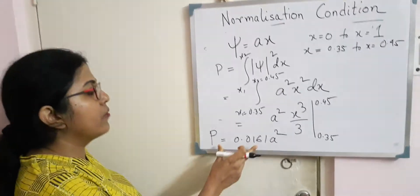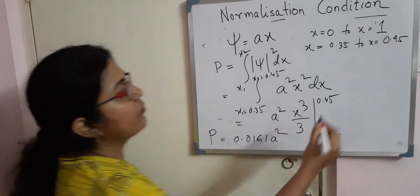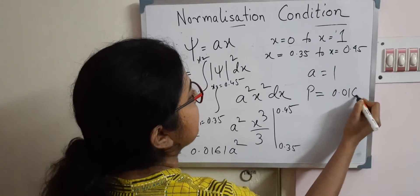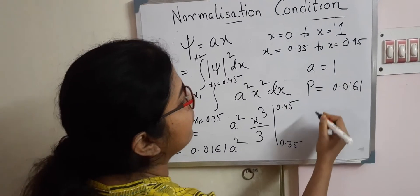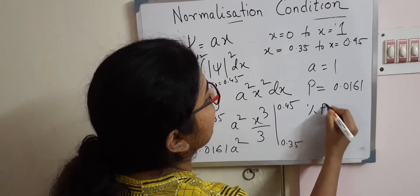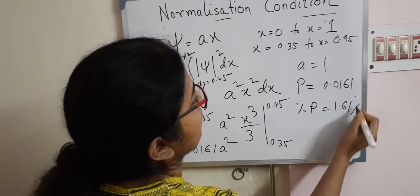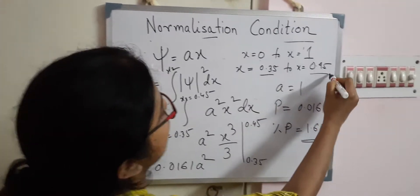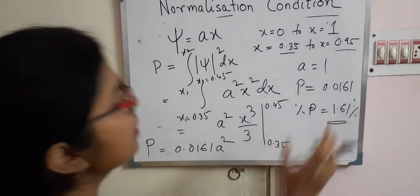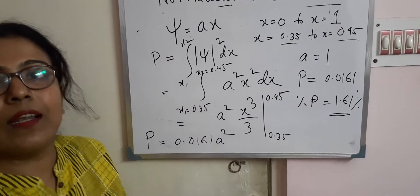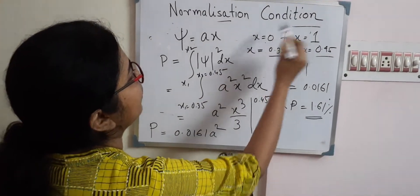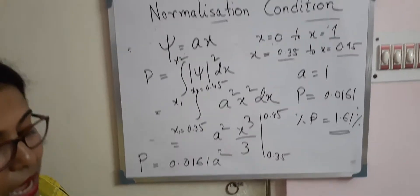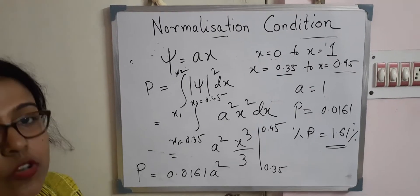This is the probability that the particle lies between these two points. If the value of a is given, you can find the numerical probability. If a = 1, then the probability is 0.0161 and the percentage probability is 1.61%. This means 1.61% is the probability that the particle lies between these two points, and the rest (100 minus this) is the probability it lies elsewhere within x = 0 to x = 1. Next, I will give another problem on how to normalize a wave function.